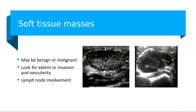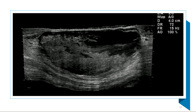Soft tissue masses are more common than you might believe and may be benign or malignant. Your role is to determine the extent of the mass, its size, its vascularity, and whether there's lymph node involvement. Here's a large sarcoma embedded in the muscle fibers — you can see the fascia linings and surrounding muscle. You'll measure it, note its location, and apply color Doppler to assess the extent of flow.